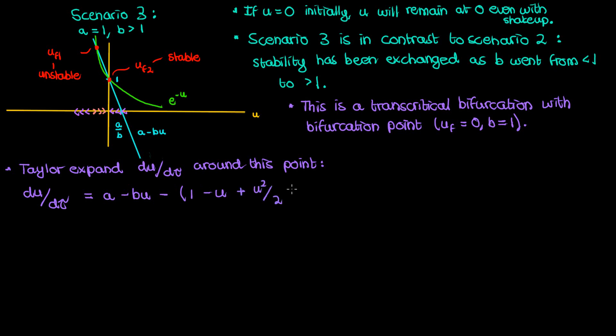So we only have to expand the exponential. When we do that this is what we end up with. Since a is already one we can cancel the a and the one and after getting rid of the higher order terms since we're only concerned about behavior around the bifurcation point, we can then combine the remaining terms as follows.